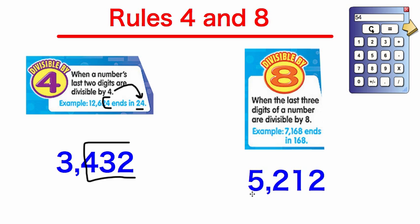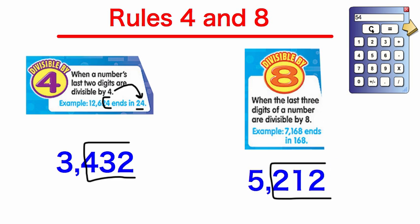Let's check one more problem. We have 5,212. We chop off the last two digits — can 4 go into 12 evenly? Yes, 4 times 3 is 12. So 5,212 is divisible by 4. What about for 8? We chop off the last three digits, 212. Using our calculator, 212 divided by 8 equals 26.5. Since we have that 0.5, 8 does not evenly go into 212. Therefore, 5,212 is not divisible by 8.